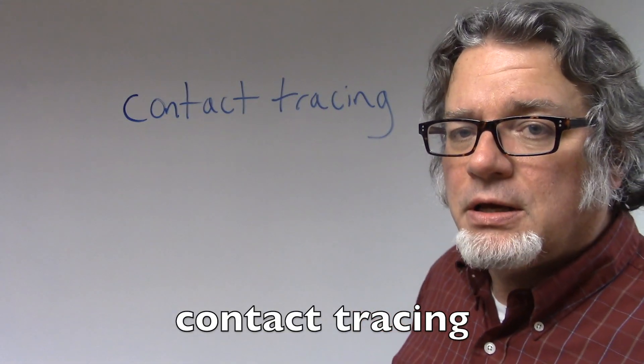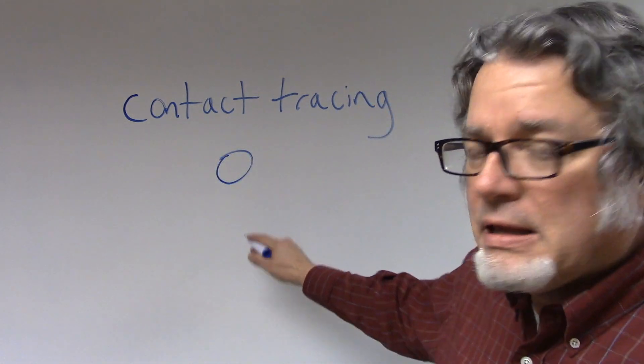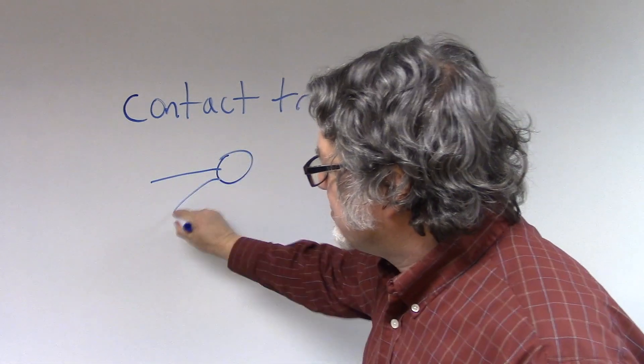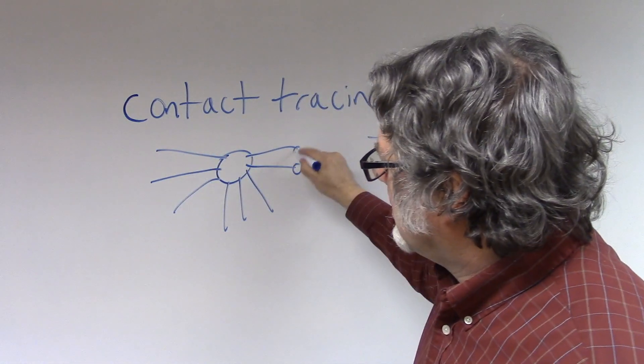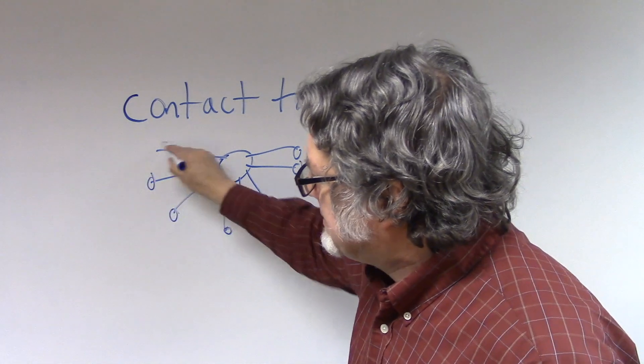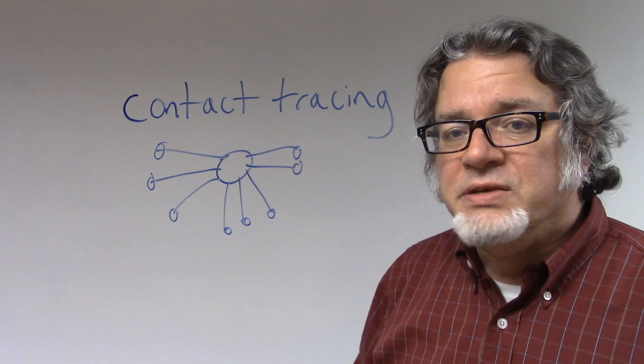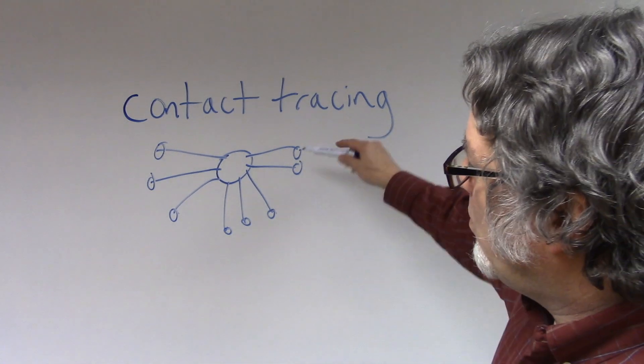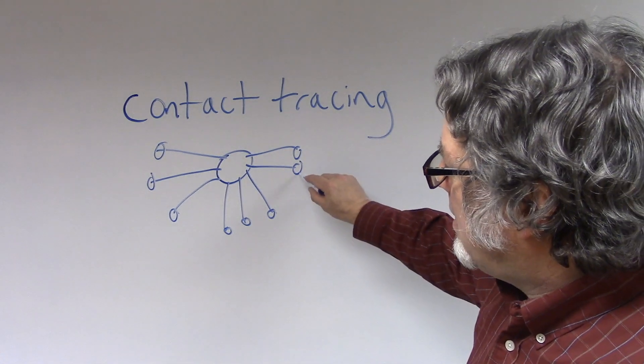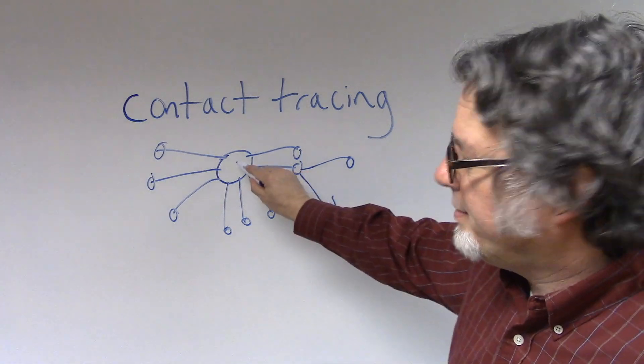Contact tracing. One person has the virus, and then there's an effort to tell anyone who had contact with that person that this person is infected. And then these people can tell others that they had contact with this person.